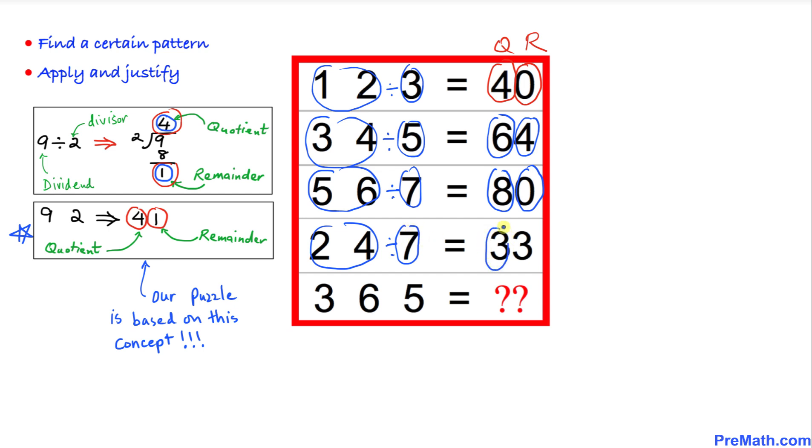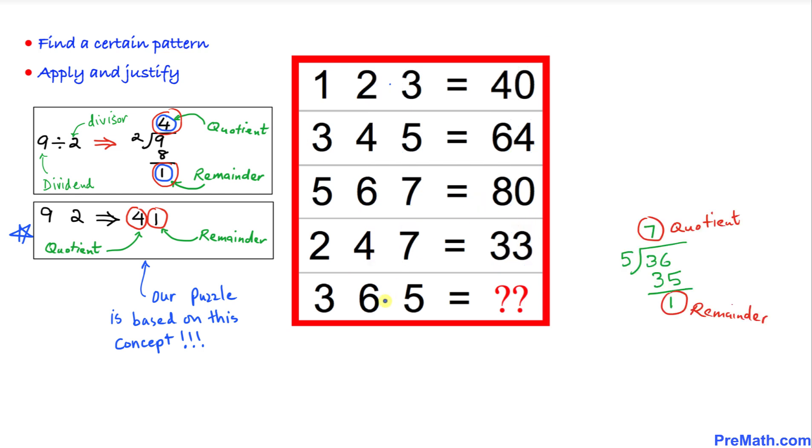And in the next row, 24 is being divided by 7 and we can see that our quotient is going to be 3 and remainder is 3 as well. Now finally let's look at this 365, so 36 is being divided by 5 as you can see over here.